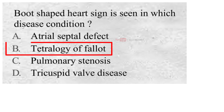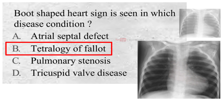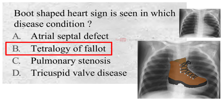B. Tetralogy of Fallot. A common sign of Tetralogy of Fallot on an X-ray is a boot-shaped heart, because the right ventricle is enlarged.